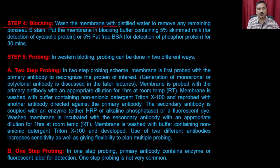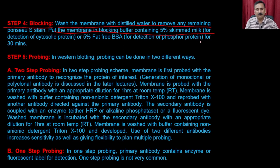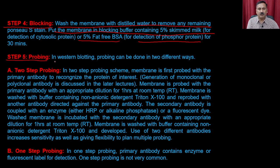In step four, you do the blocking: wash the membrane with distilled water to remove any remaining Ponceau stain, then put the membrane in blocking buffer containing 5% skim milk. If you are doing western blotting to detect phosphorylated proteins, you can use BSA. In step five, you do the probing.